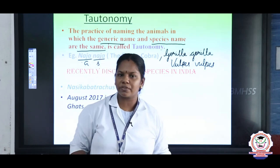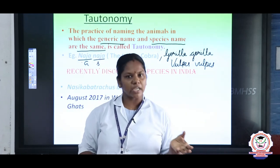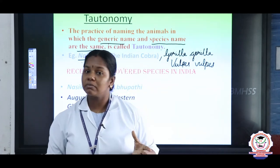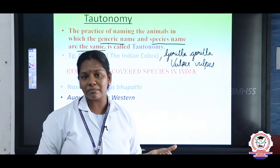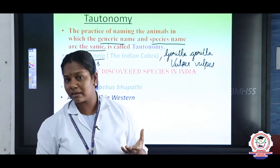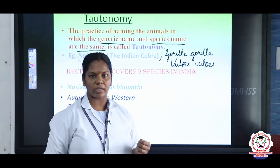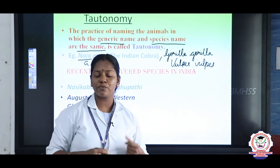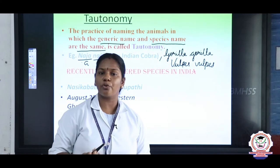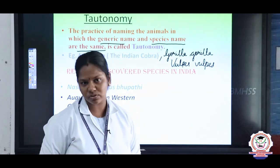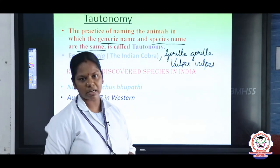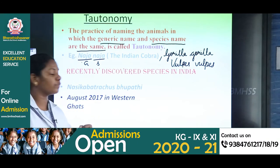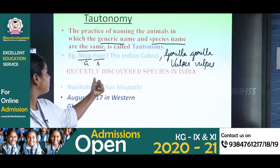Here is an activity for you children: take a notebook and write down 10 examples for tautonomy and 10 examples for binomial nomenclature. This will help you learn more scientific names of animals.